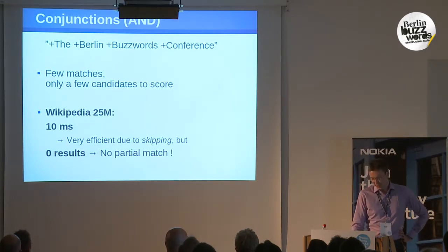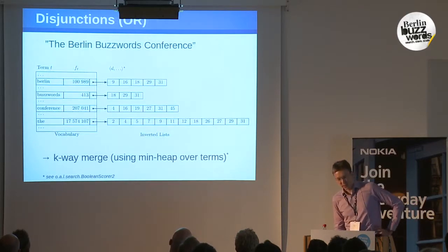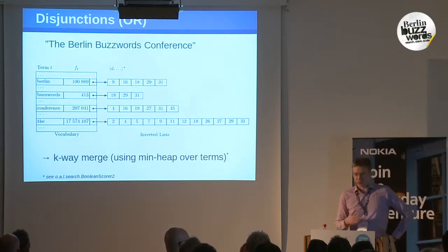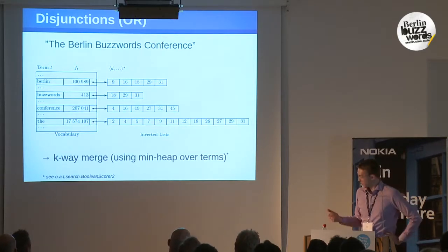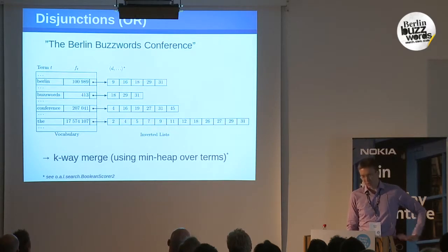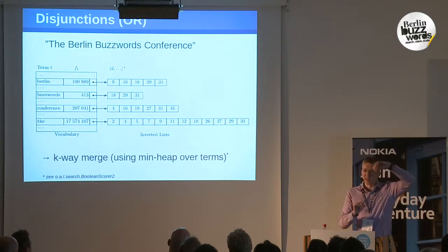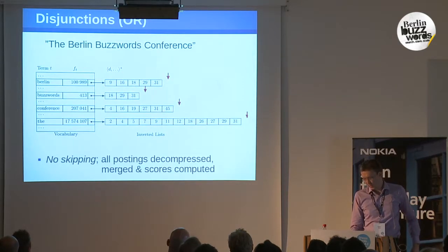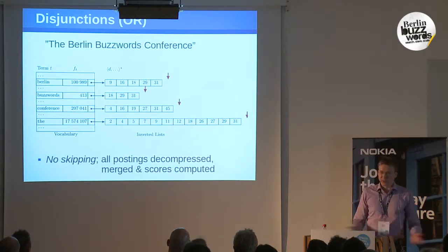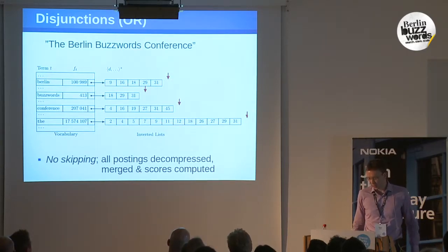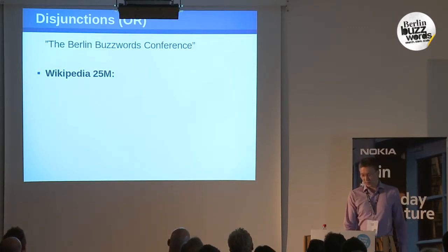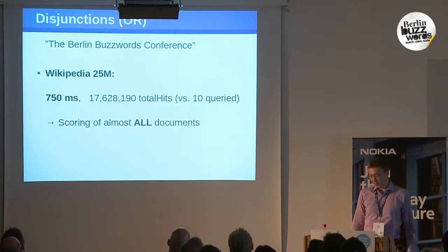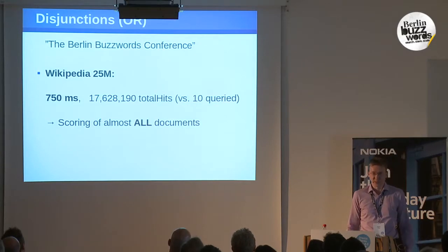We want partial matches, so the opposite modality is disjunction — we're happy if a document contains just one of the terms. You use a K-way merge with pointers in each inverted list, moving them forward since document IDs are sorted. There's no skipping at all; you have to look at all postings for all query terms, decompress them, merge them, and compute scores. On 25 million documents that takes over 700 milliseconds — and I'm scoring more than 70 million documents, but I was only interested in 10.